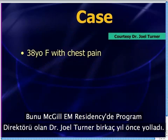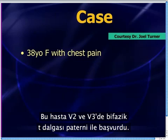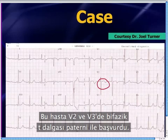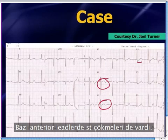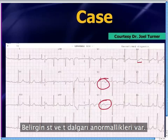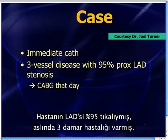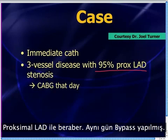Dr. Joel Turner, program director at the EM residency at McGill in Canada, sent this case — a 38-year-old woman with chest pain. This patient presented with the biphasic T-wave pattern in V2 and V3 and a little ST depression in some of the anterior leads. Your computer will pick this up as well because it's not subtle — there are significant ST and T-wave abnormalities here. His cardiologist didn't argue; they took this patient right to the cath lab. The patient was found to have a 95% proximal LAD occlusion, actually triple vessel disease, and went for bypass surgery later that day.